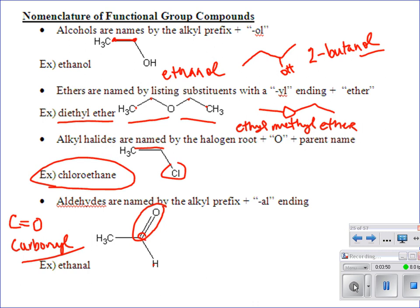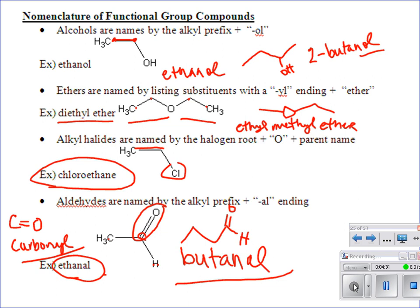For aldehydes, the carbonyl is terminal — it's on the end. You can recognize it by the H-C=O (the 'HAL'). Name it like an alkane, then drop the -e and add -al. So ethane becomes ethanal. For a four-carbon example: one, two, three, four — that's butanal. The terminal carbon is always carbon one, so you don't need to specify a number.